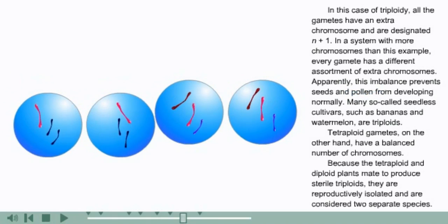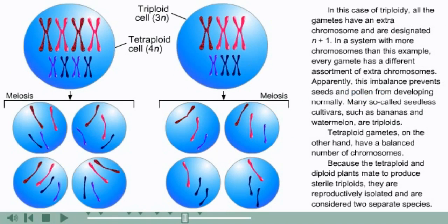In this case of triploidy, all the gametes have an extra chromosome and are designated n plus one. In a system with more chromosomes than this example, every gamete has a different assortment of extra chromosomes. Apparently, this imbalance prevents seeds and pollen from developing normally. Many so-called seedless cultivars, such as bananas and watermelon, are triploids.